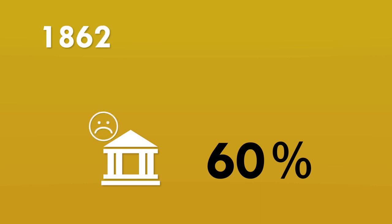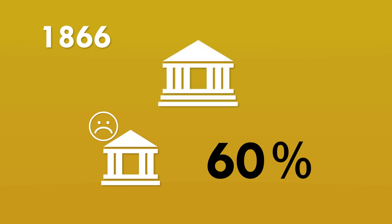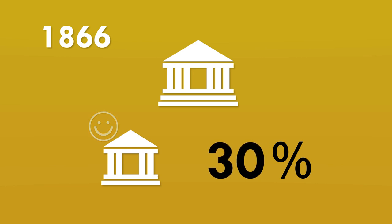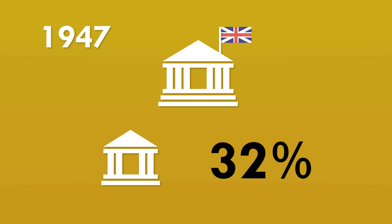In 1866, there was a banking crisis, and the Bank of England then took on the role of lender of last resort, committing to lend to banks if they ran out of money to make their payments. Once this safety net was in place, banks reduced their liquid reserves to around 30%. In 1947, when the Bank of England was nationalised, they imposed a formal liquidity reserve ratio of 32%. This required banks to hold £32 of cash, central bank reserves and government bonds for every £100 balance in customers' accounts. Because government bonds would earn the banks some interest, unlike reserves and cash, the banks would try to hold as much of this 32% as possible in the form of bonds.